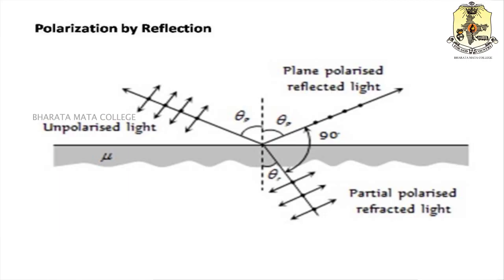There are different methods to produce polarized light, such as polarization by reflection and polarization by refraction. When unpolarized light falls on a transparent material like glass or water, it gets reflected and part of it gets refracted. When we examine the reflected light, it is partially polarized. As we change the angle of incidence, the degree of partial polarization increases, and at a particular angle, the light is completely plane polarized. This angle is known as the angle of polarization.